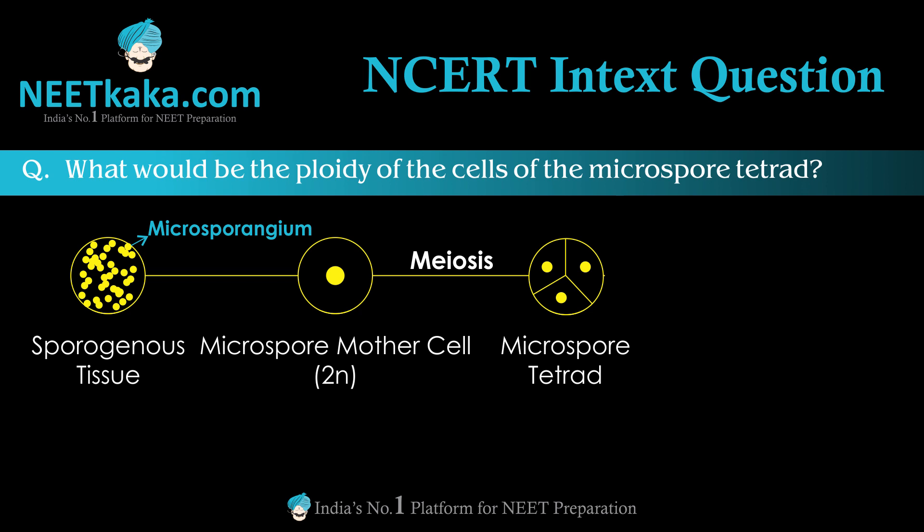As we know, the sporogenous tissue is diploid — each cell of the sporogenous tissue is diploid. The sporogenous tissue cells, which are the microspore mother cells, are diploid (2N). So the microspore mother cells are 2N and they undergo meiosis.